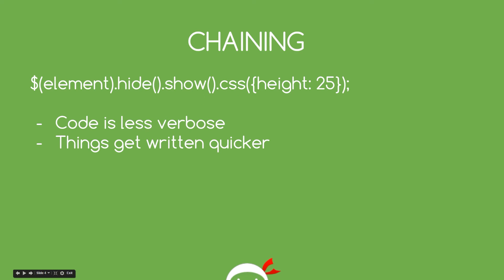jQuery also has a cool feature called chaining. Chaining is essentially applying different methods or effects to an element in one line, much like this here. We're going to get into chaining later on, so you might not know what this is at the minute — don't worry about that. Essentially, what it means at the core is that the code is less verbose. It's much easier to read, and things get written much, much quicker.